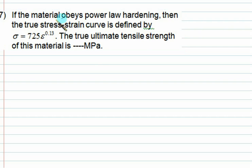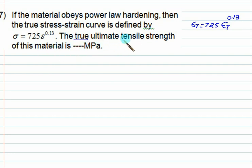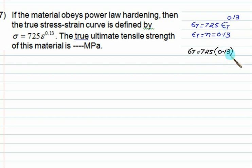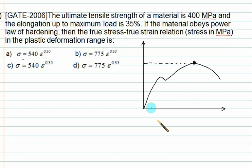In the next problem, the material obeys power-law hardening and the true stress relation is given as: σₜ = 725 × εₜ^0.13. We want to calculate the true ultimate tensile strength of this material. The maximum stress value on the curve is the SUT, which is given as 400 MPa.